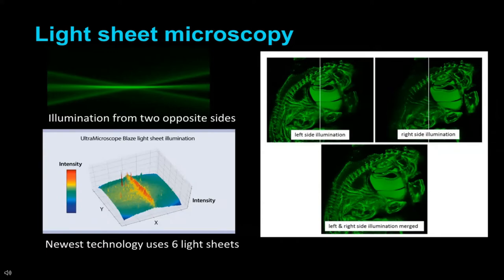Some light sheet microscopes also have software that actually adjusts the light sheet and imaging so that one field of view is made up of many different images, ensuring the light sheet is as focused as possible on that field of view.